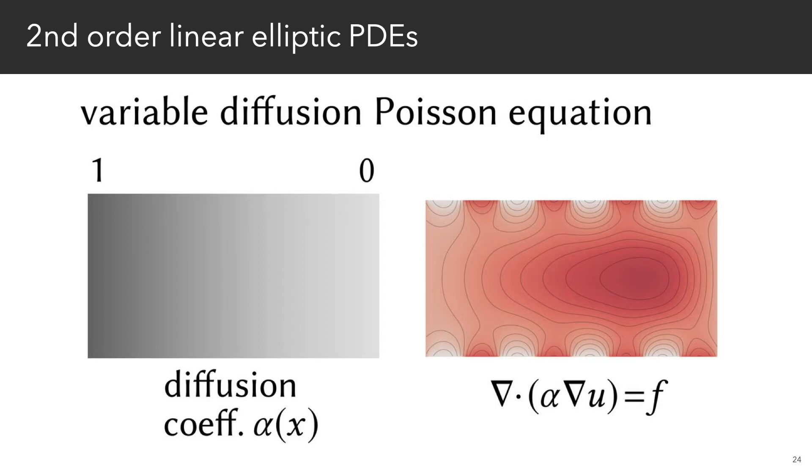We can control the rate of heat diffusion by replacing the Laplacian with the operator grad of alpha grad u, where alpha is a scalar function. Physically, alpha might describe the thickness or varying composition of a material.